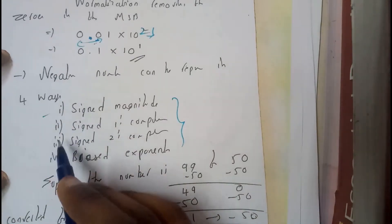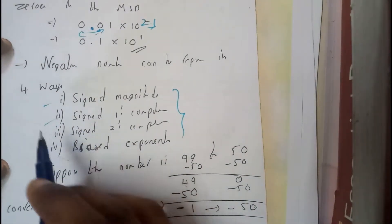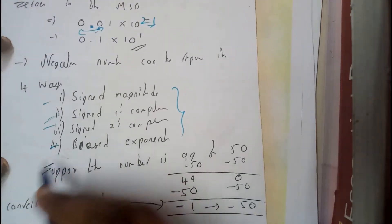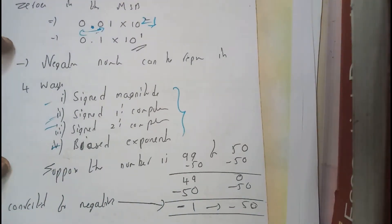Those are nothing but signed magnitude, signed one's complement, signed two's complement, and biased exponent.